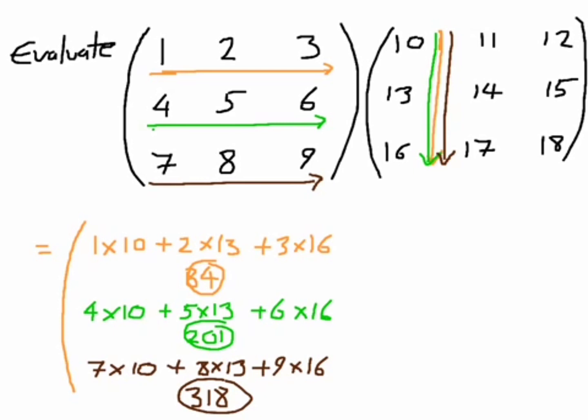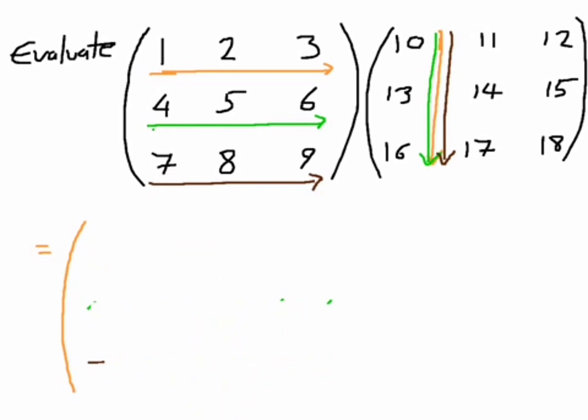Now I'm going to rub these out. Very quickly, you might want to copy them down or pause the video, but let me make room for my next column. Okay, hopefully you've got those down. I'm just going to write them in again. So it was 84, 201, and 318.